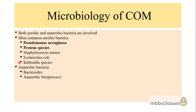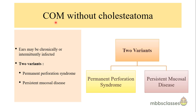In some cases, other offending organisms could be anaerobic bacteria like bacteroides and anaerobic streptococci. Chronic otitis media without cholesteatoma has two variants: permanent perforation syndrome and persistent mucosal disease. These two variants are identified clinically based on otoscopic examination and history of the patients.